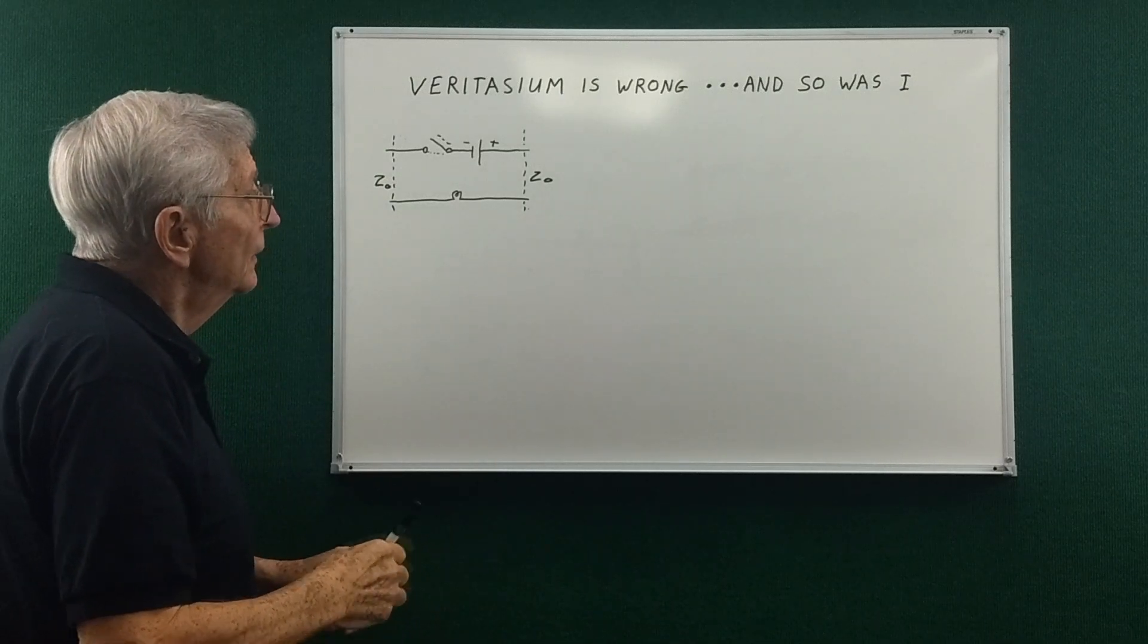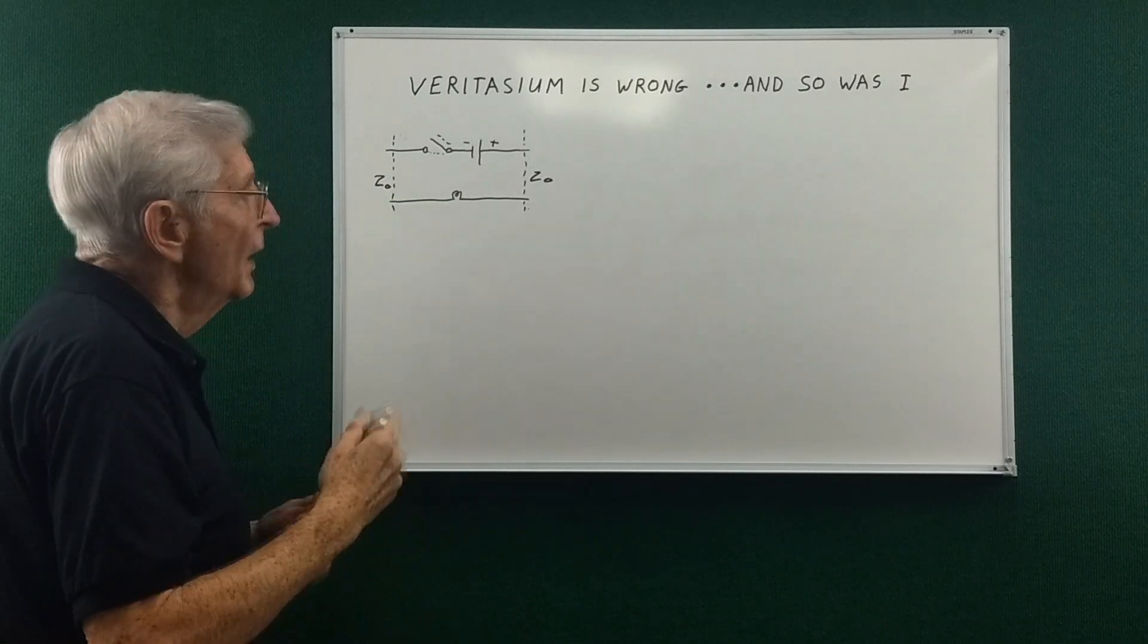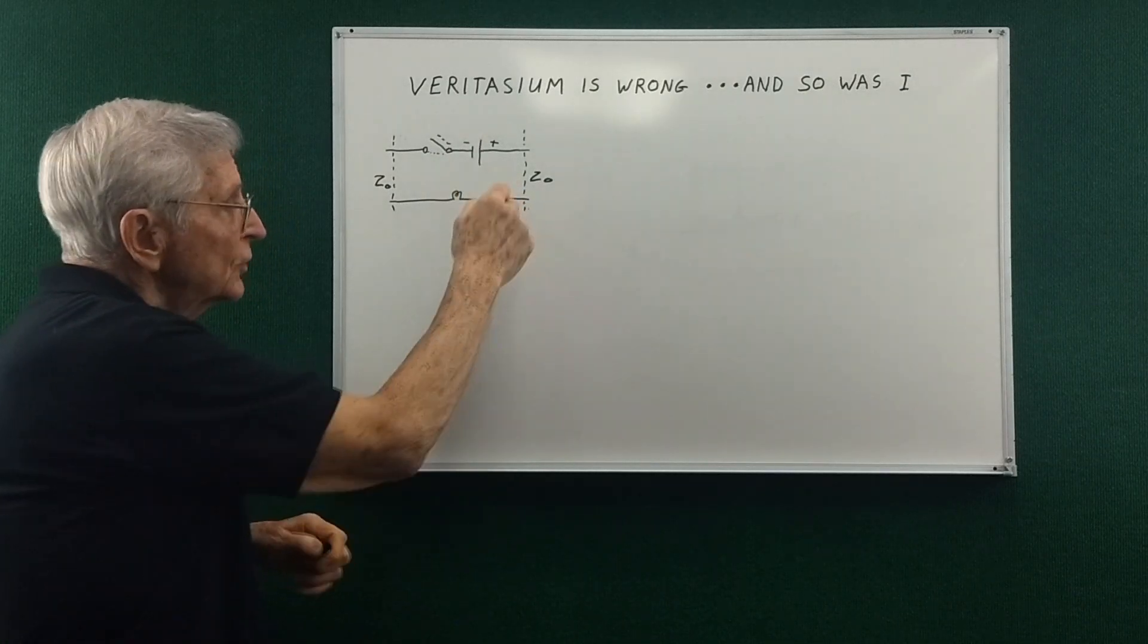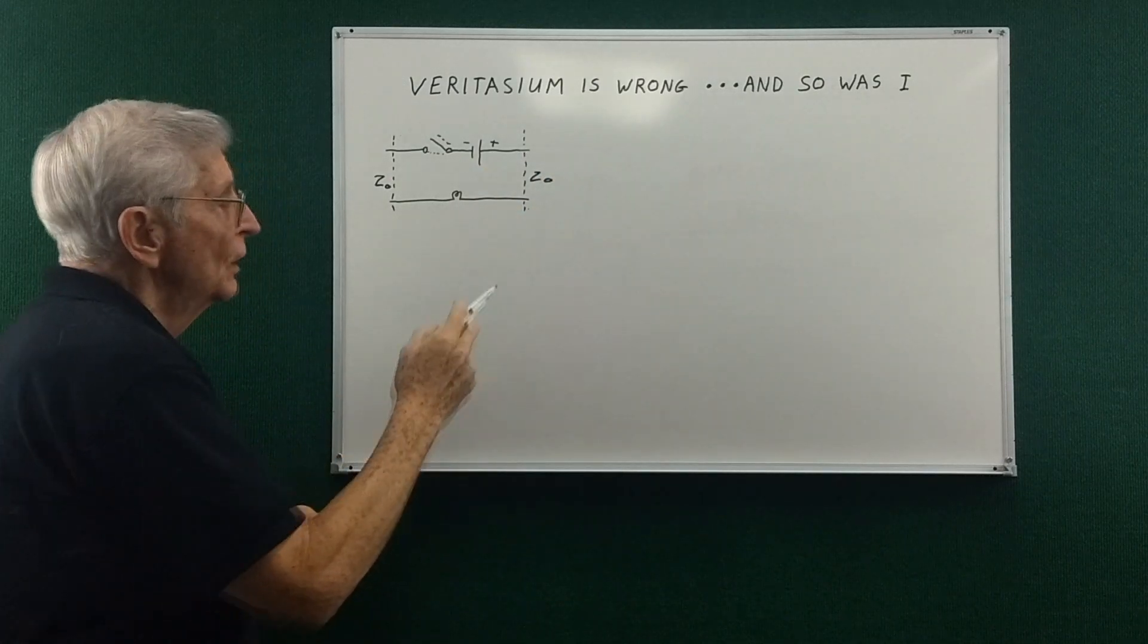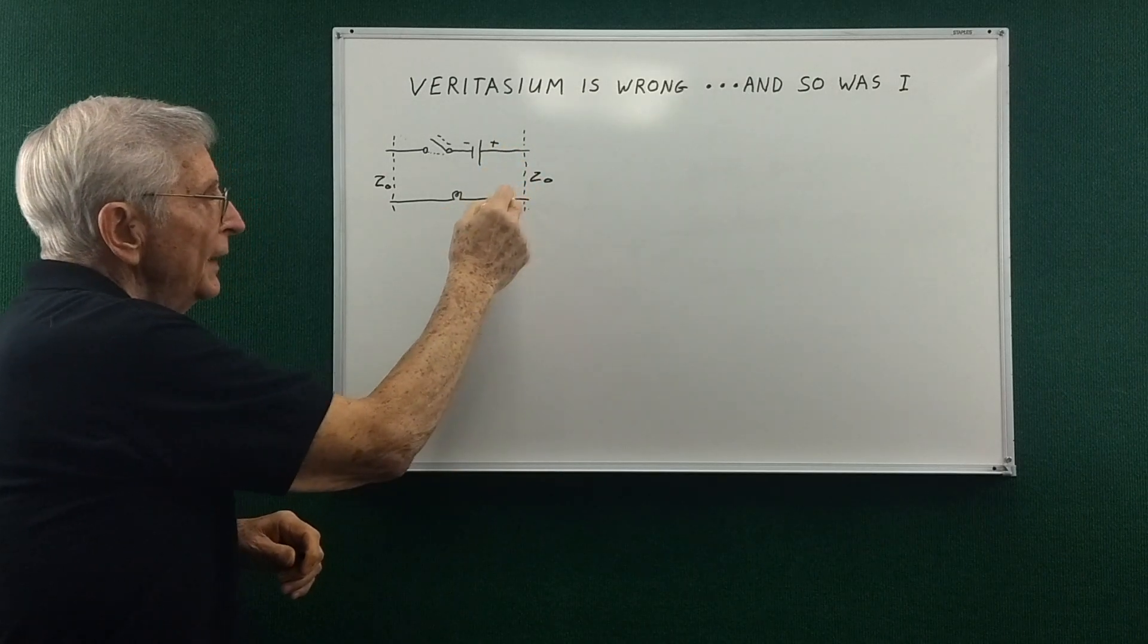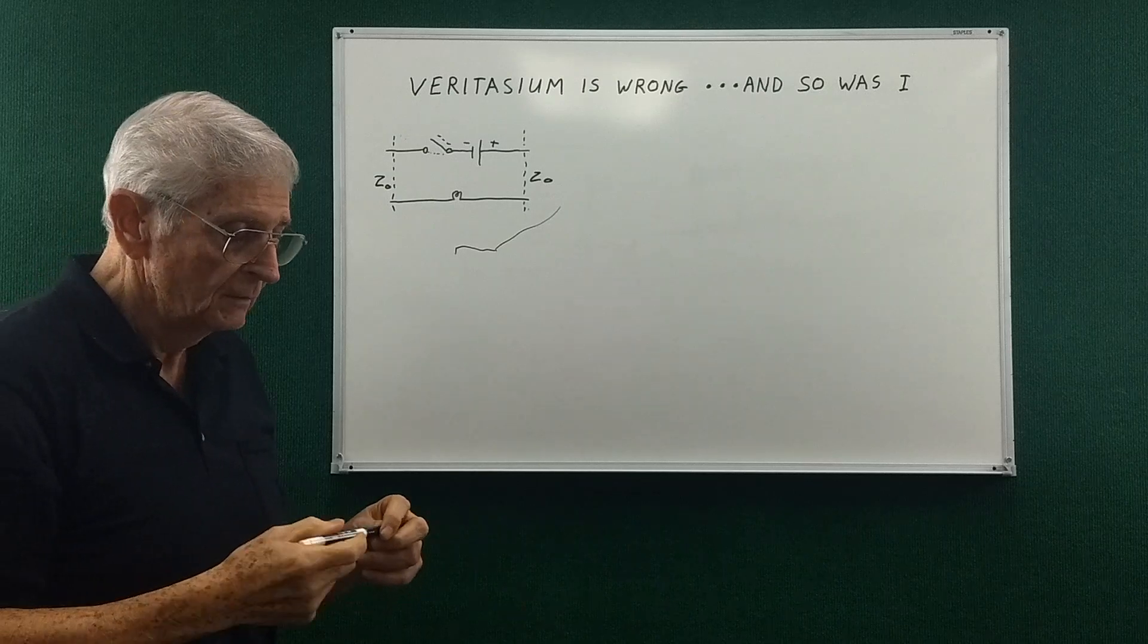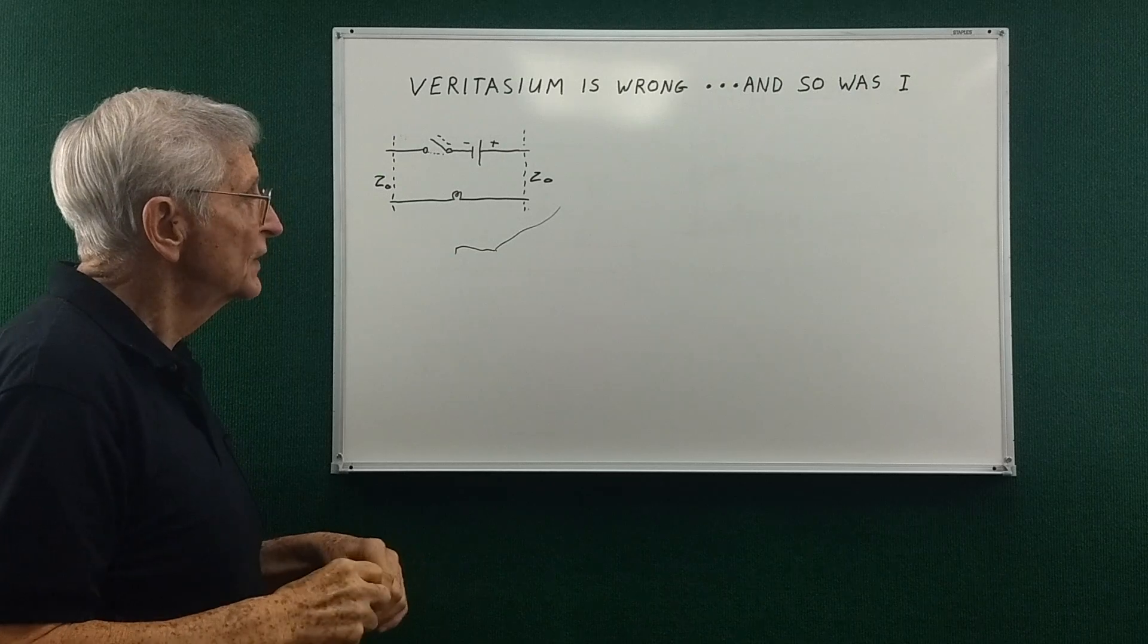So these are things I really don't want to challenge. Oh by the way before I forget Alpha Phoenix did an actual setup where he made a transmission line and he showed that there's an initial current that would be flowing this way before the main current is set up through the actual wires. So that's linked below so be sure and watch that.